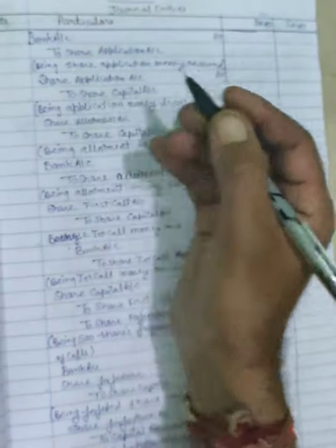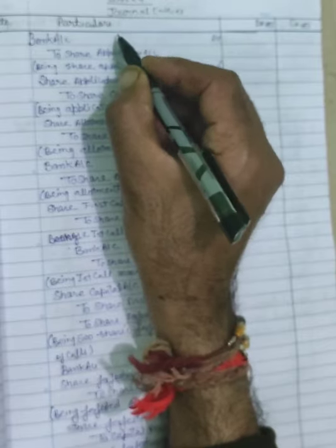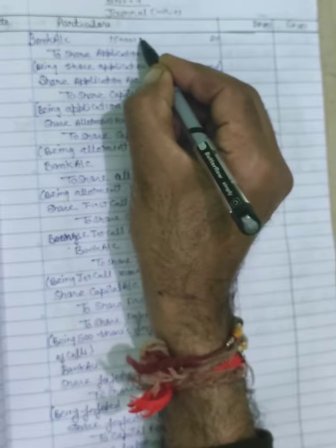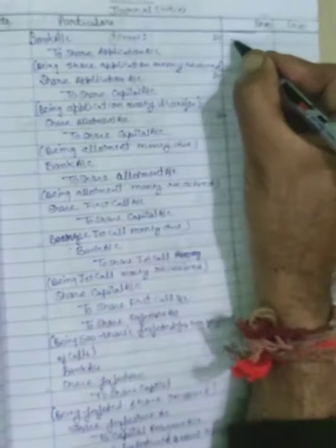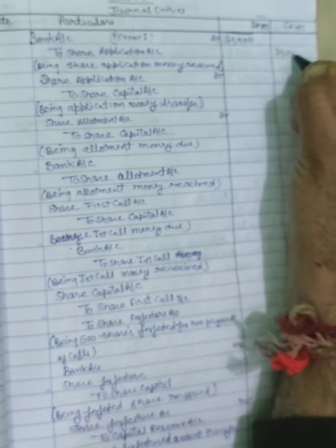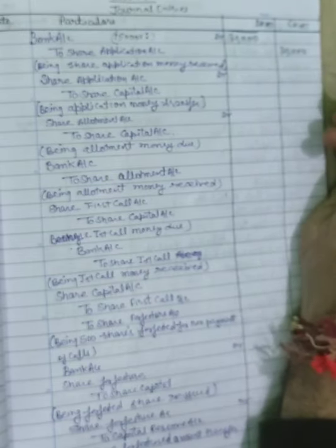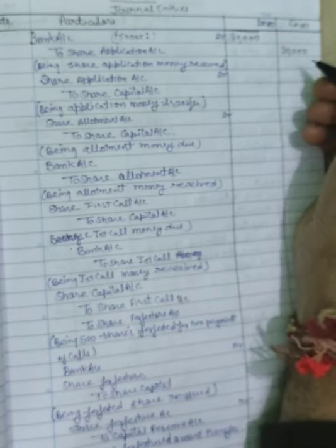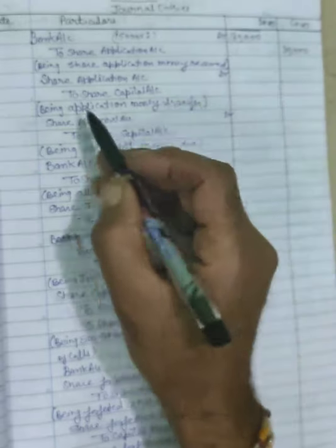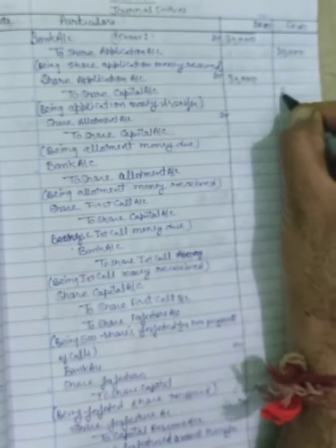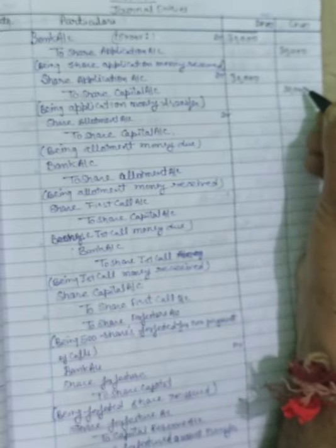Share application account: 15,000 shares. Entry - Bank account debit to share application account Rs.30,000 and Rs.30,000. After that, share application transfer to share capital: Rs.30,000 and Rs.30,000.